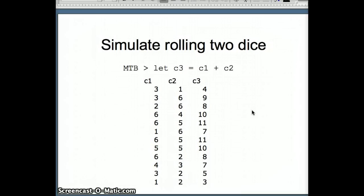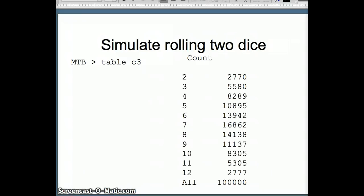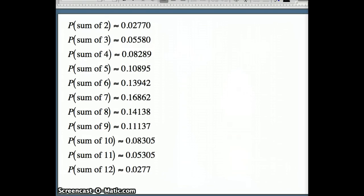But we have 100,000 numbers, and we need to figure out how many 2's do we have, how many 3's do we have, how many 4's do we have. The command for that will be table. So if I say table C3, it will go ahead and tabulate all the results of the numbers in column 3. So there you can see our tabular results. The number 2 showed up 2,770 times, number 3 showed up 5,580 times. And we can use these relative frequencies to approximate our probabilities.